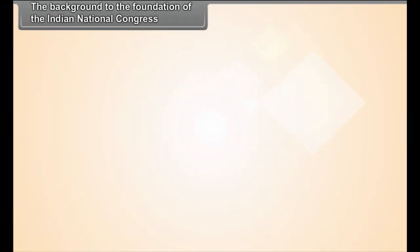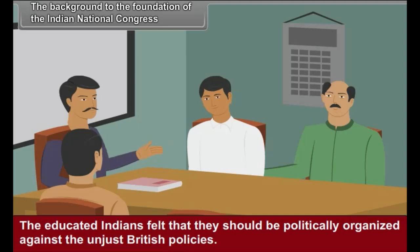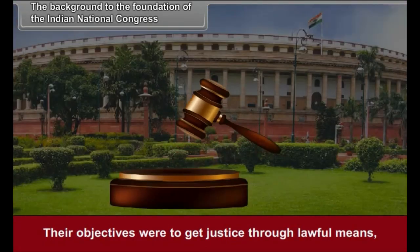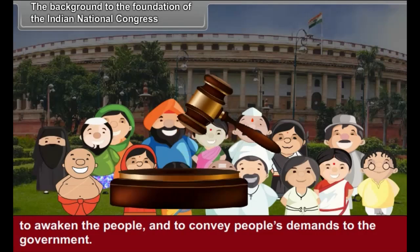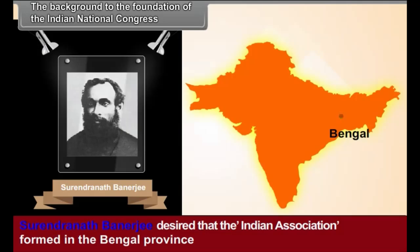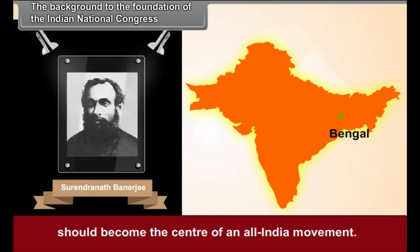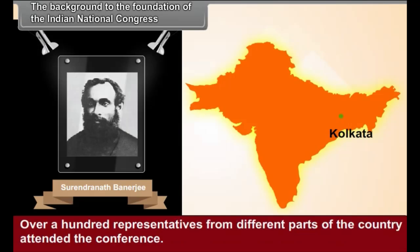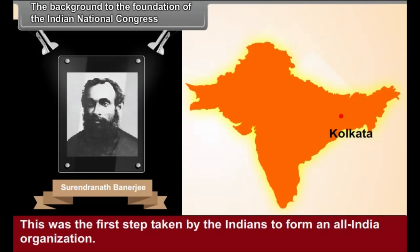The Background to the Foundation of the Indian National Congress: The educated Indians felt that they should be politically organized against the unjust British policies. Their objectives were to get justice through lawful means, to awaken the people, and to convey people's demands to the government. Provincial political associations were established in different parts of the country. Surendranath Banerjee desired that the Indian association formed in Bengal should become the center of an all-India movement. In 1883, he organized an all-India national conference at Kolkata, which over a hundred representatives from different parts of the country attended — the first step taken by Indians to form an all-India organization.